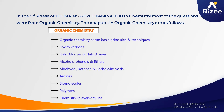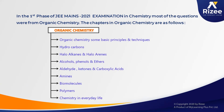In the first phase of the JEE Mains 2021 Examination Chemistry, most of the questions were from Organic Chemistry. Chapters from first year and second year in Organic Chemistry are: Organic Chemistry Basic Principles and Techniques, Hydrocarbons, Haloalkanes and Haloarenes, Alcohols, Phenols and Ethers, Aldehydes, Ketones and Carboxylic Acid, Amines, Biomolecules, Polymers, and Chemistry in Everyday Life.